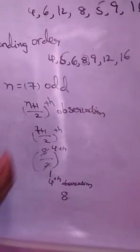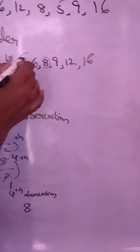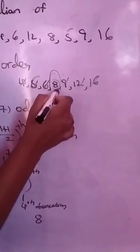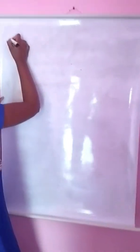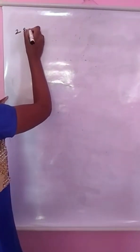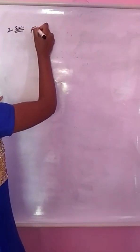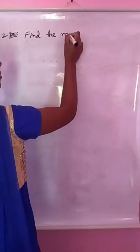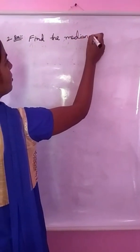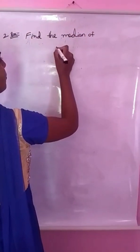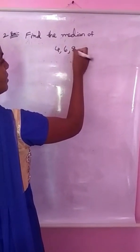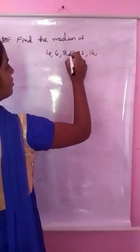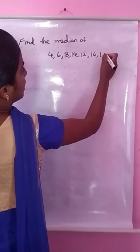In shortcut: 4 and 16 cancel, 5 and 12 cancel, 6 and 9 cancel. So the answer is 8. Second example: Find the median of 4, 6, 8, 14, 12, 16, 18, 19.